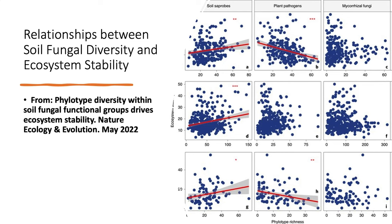What stability measures is the ability to produce the same productivity from year to year, irrespective of climatic conditions. What they discovered is that in grasslands, as you increase the level of saprophytic fungi and the diversity of saprophytic fungi in your system, the stability of the system increased. So the more you can encourage a large group of basidiomycetes, ascomycetes, and mycorrhizal fungi, the better off you're going to be in terms of the ability of that ecological system to be stable.